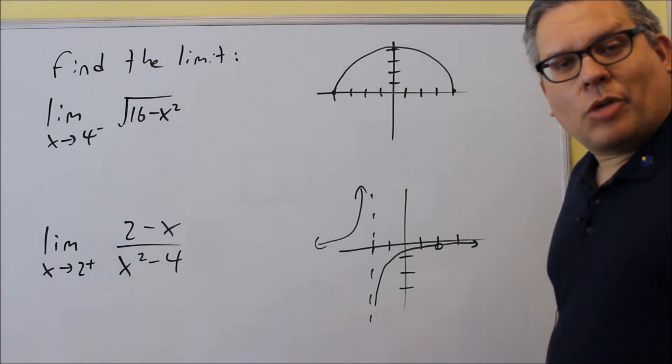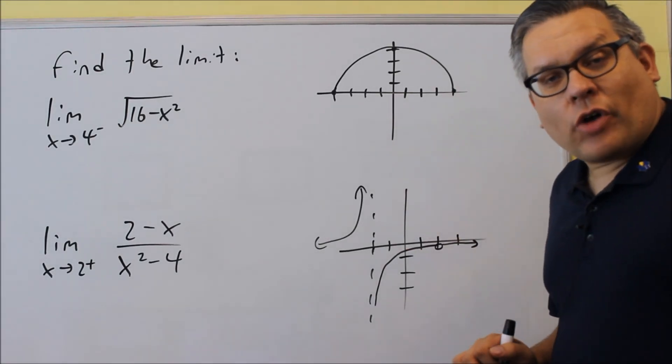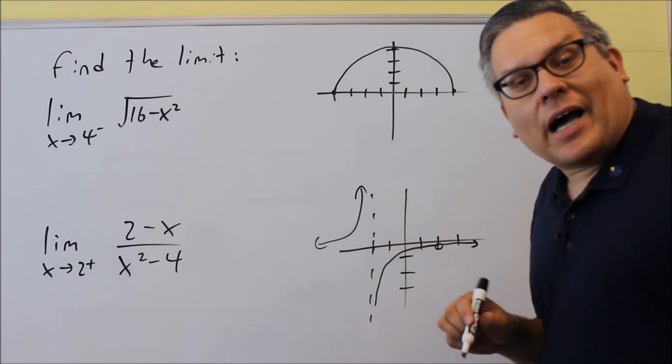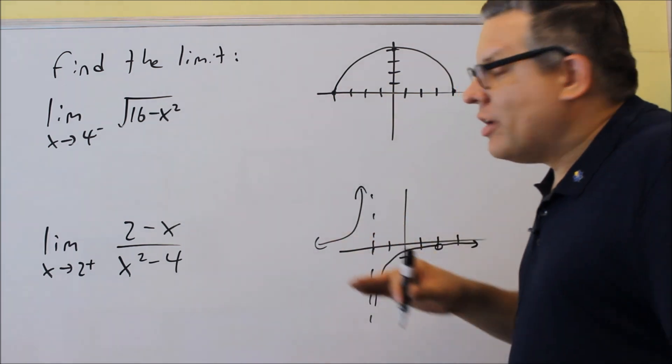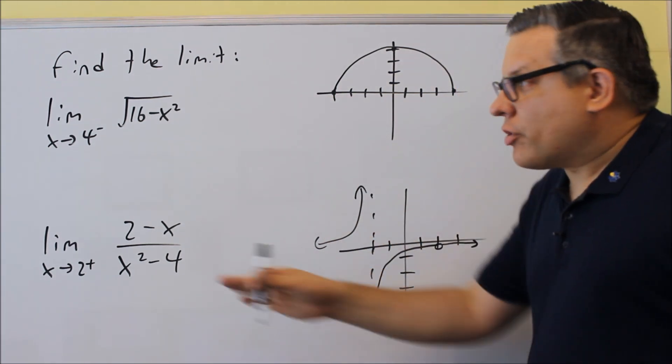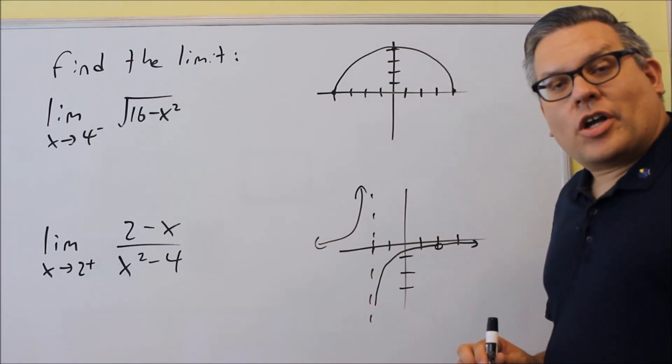Okay, we've already talked about left and right hand limits as far as reading values off of a graph, and previously we've talked about how you can find a limit algebraically. So now we're going to combine those together and talk about how you can find a limit algebraically if you have left and right hand side limits.